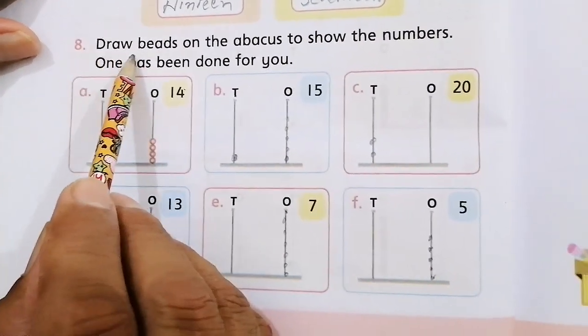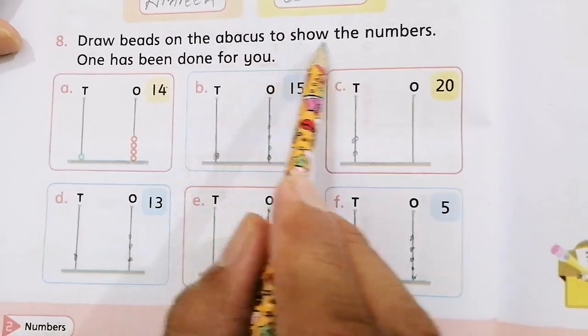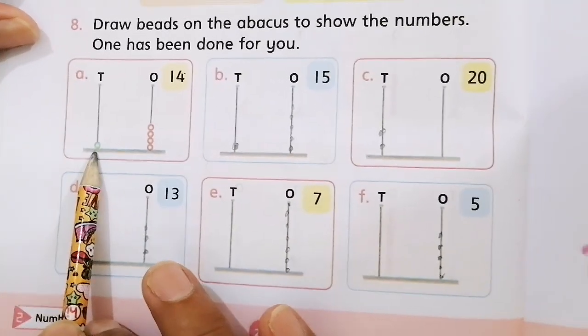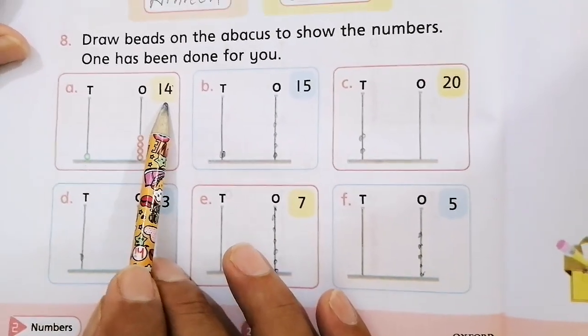Now we move to question number 8. Draw beads on the abacus to show the numbers. One has been done for you. 1 bead is here on the tens place and 4 beads on the ones place, so 14. This is the first one done for you.